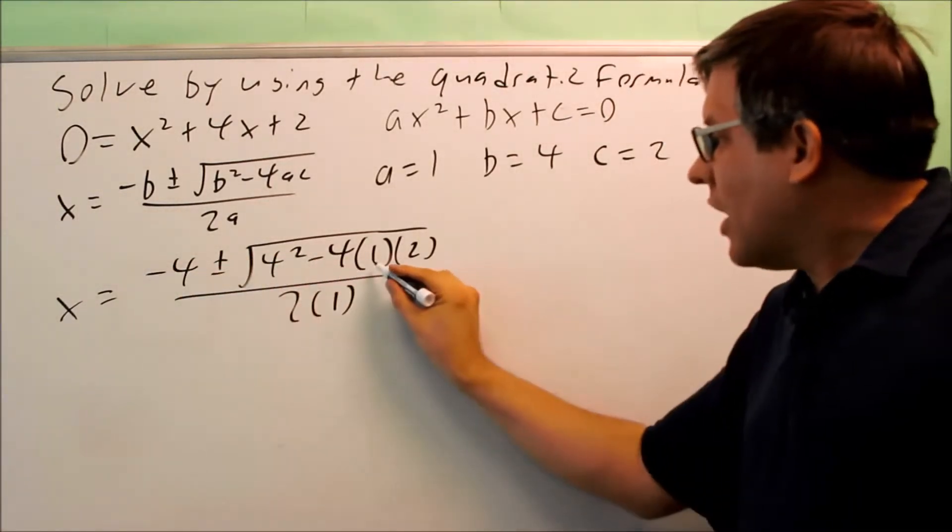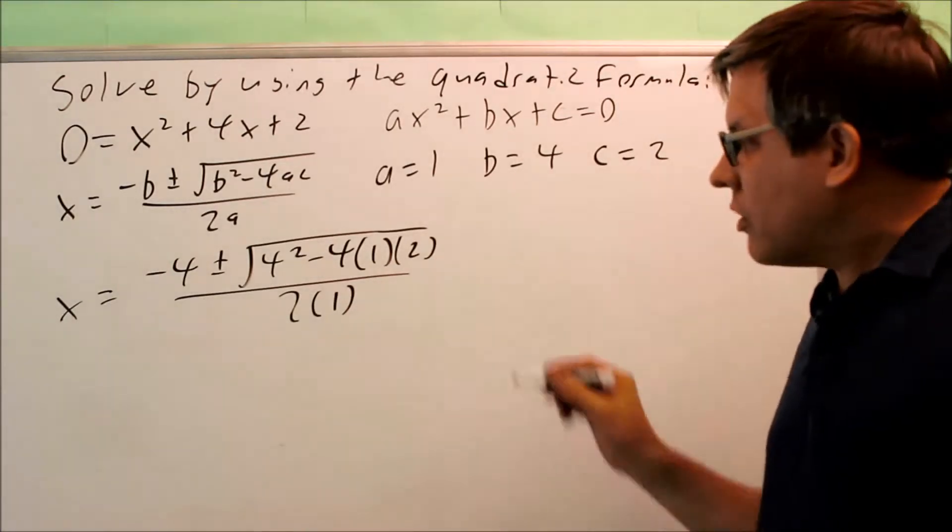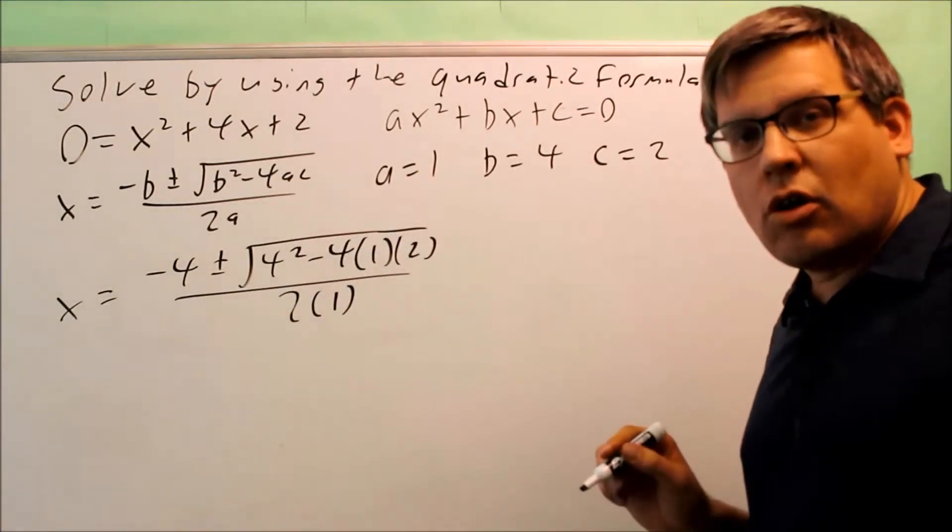b isn't put in twice. I have the a there. c is here. 2 times a on the bottom. Now you want to simplify this down as far as you can go.